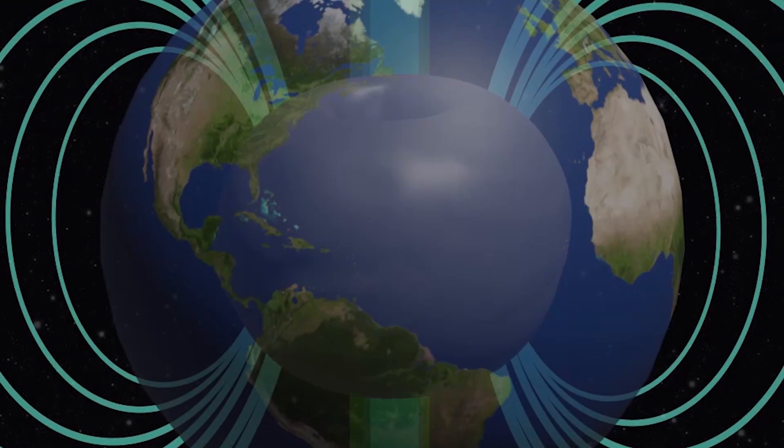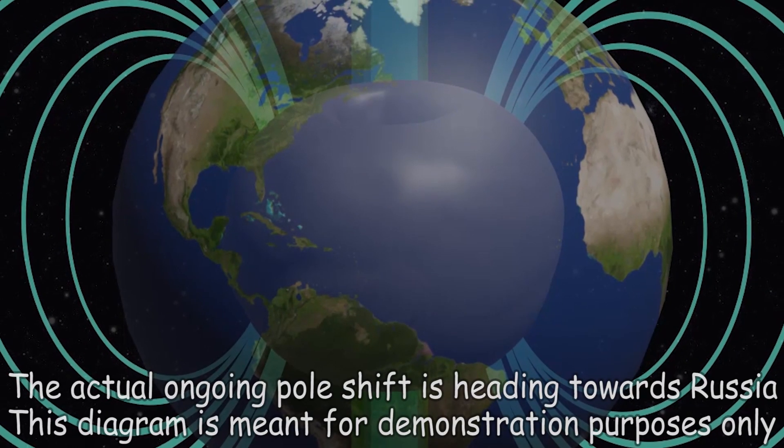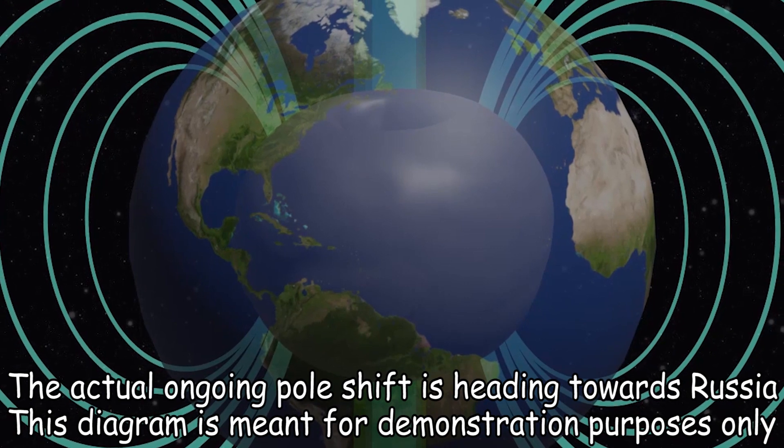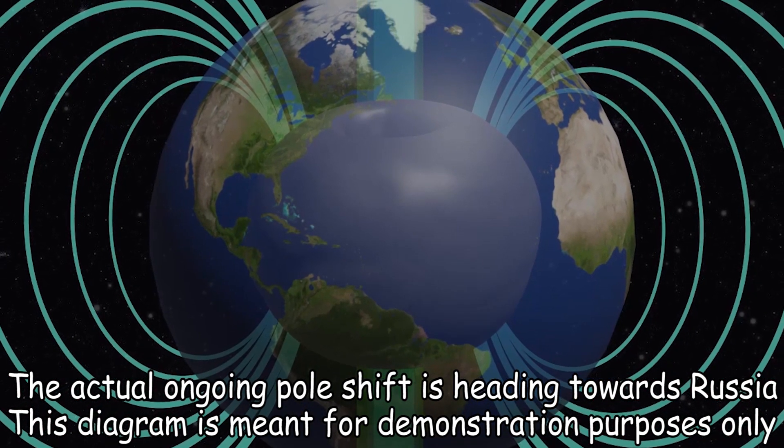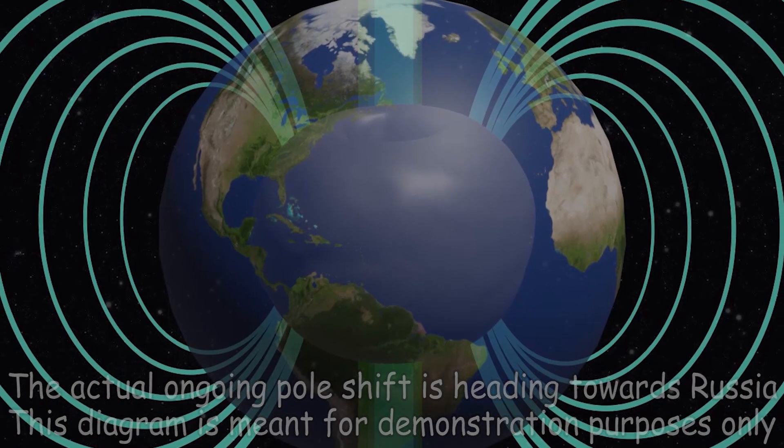Since the inner core of Earth is solid and spins independently from the outer crust, the magnetic pole shift will first cause the inner solid core to shift on its axial angle, which would put pressure on the outer crust.